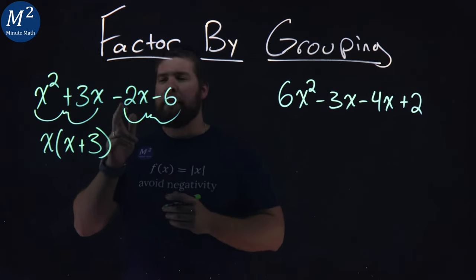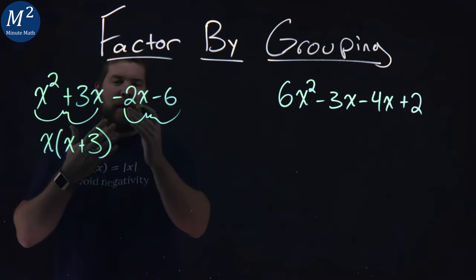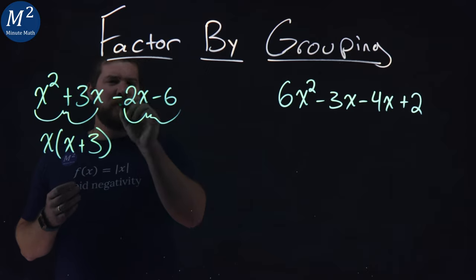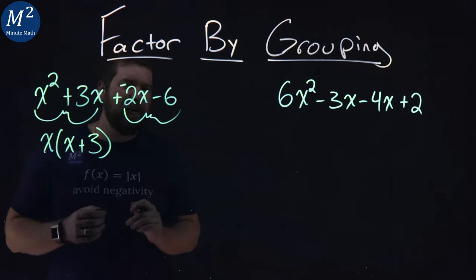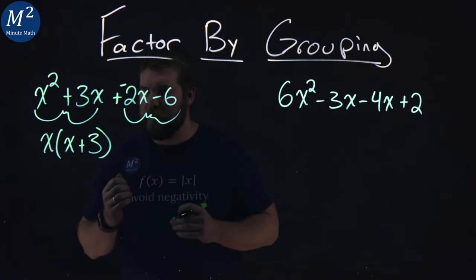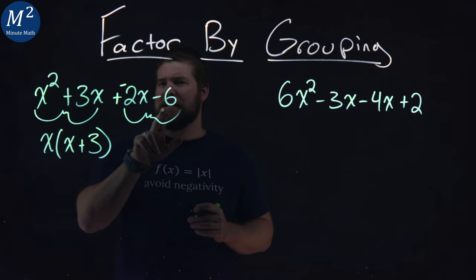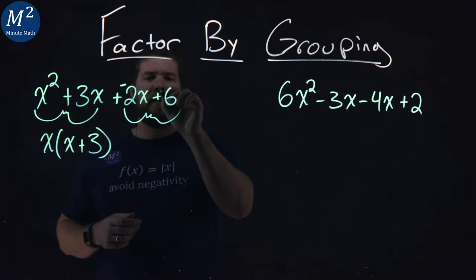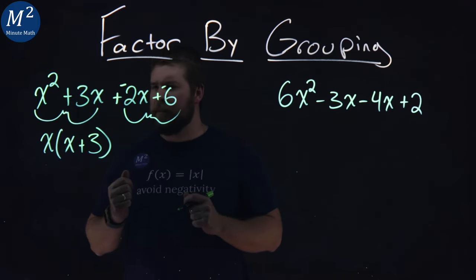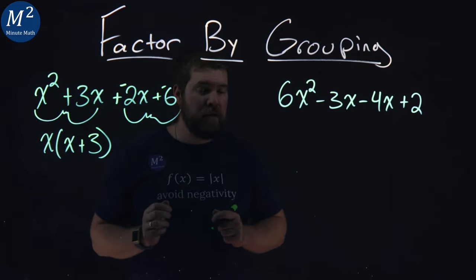Moving on, I have a minus 2x minus 6. And I actually like to have my operation in the middle be addition. So I'll do add a negative right here. It makes it a little easier for me to see it, but whatever's easiest for you. Now I have a minus 2x and a minus 6 or a plus a negative 6. However, it floats your boat. And I can pull out a negative 2 from both of these numbers.